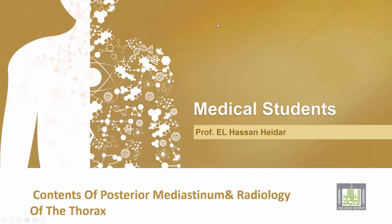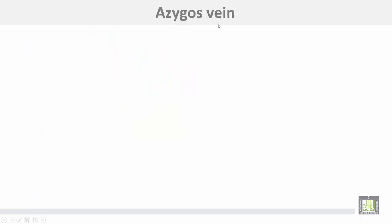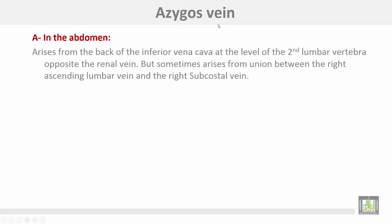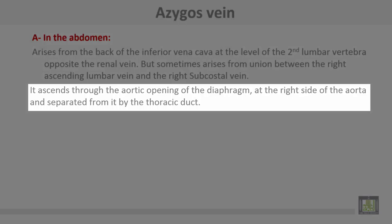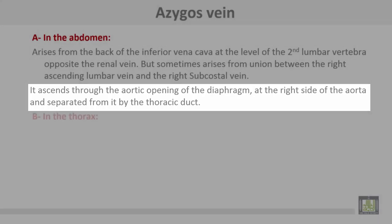The contents of the posterior mediastinum and the radiology of the thorax. The first content is the azygous vein. It starts in the abdomen from the back of the inferior vena cava at the level of the second lumbar vertebra, opposite the renal vein, but sometimes arises from union between the right ascending lumbar vein and the right subcostal vein. It ascends through the aortic opening of the diaphragm at the right side of the aorta, separated from it by the thoracic duct.